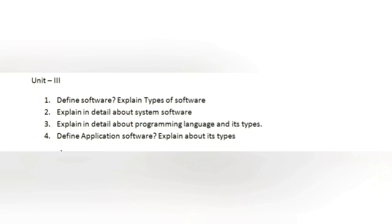Question: define software and explain types of software. First we will define software, then go over types like system software and application software. Question number two: explain in detail about system software.